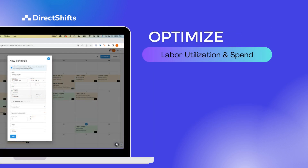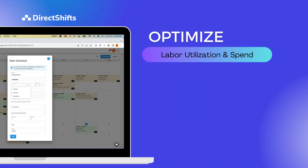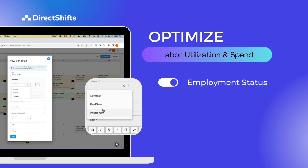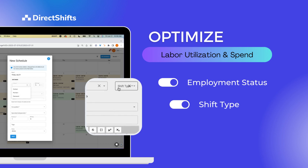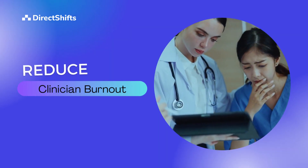Optimize labor utilization and spending with our dynamic rules engine that enables you to automatically set shift availability by labor pool, shift type, and bill rates.